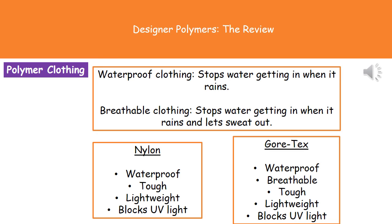We use polymers in clothing, and we need to know two key terms. First, waterproof clothing stops water getting in when it rains but does not allow sweat from our bodies to escape. Breathable clothing, by comparison, also stops water getting in but additionally lets sweat out — hence 'breathable.' Breathable clothing is better than waterproof clothing because it does allow sweat out.